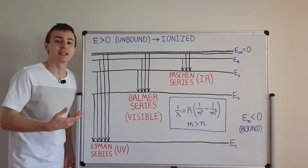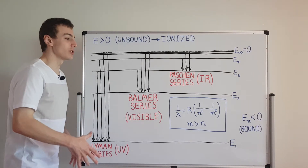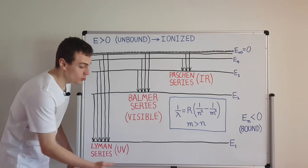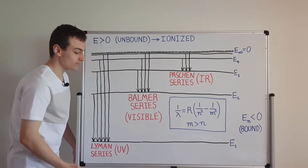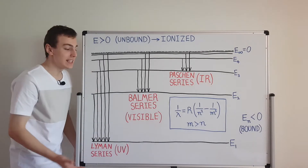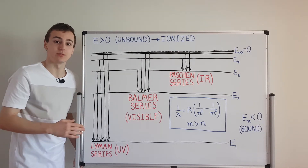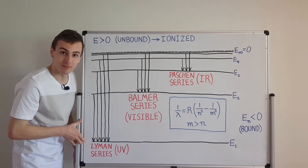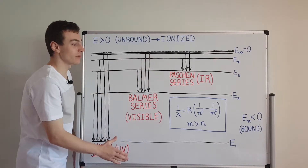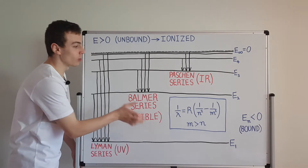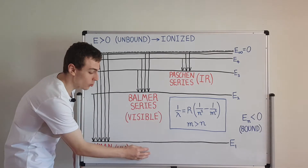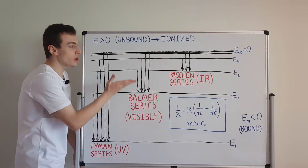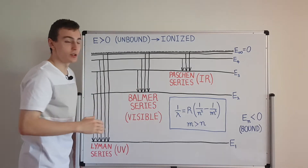This is all a consequence of quantization. Angular momentum quantization is what we use to derive the expressions for energy. The nth energy level is related to the ground state energy: the ground state energy divided by n squared gives us the nth energy level, which we derived in a previous video. So E2 is actually a quarter in magnitude of E1, but it's bigger because all of these values are negative. We divide E1 by n squared to get all the other energy levels.